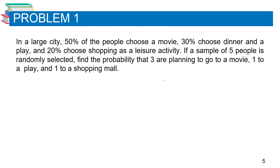Let's try problem number one. In a large city, 50% of people choose a movie, 30% choose dinner and a play, and 20% choose shopping as a leisure activity. If a sample of five people is randomly selected, find the probability that three are planning to go to a movie, one to a play, and one to shopping.